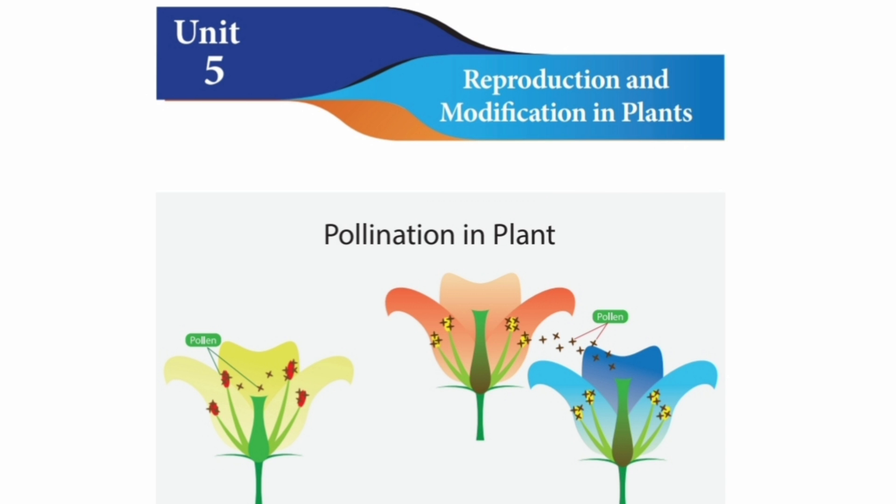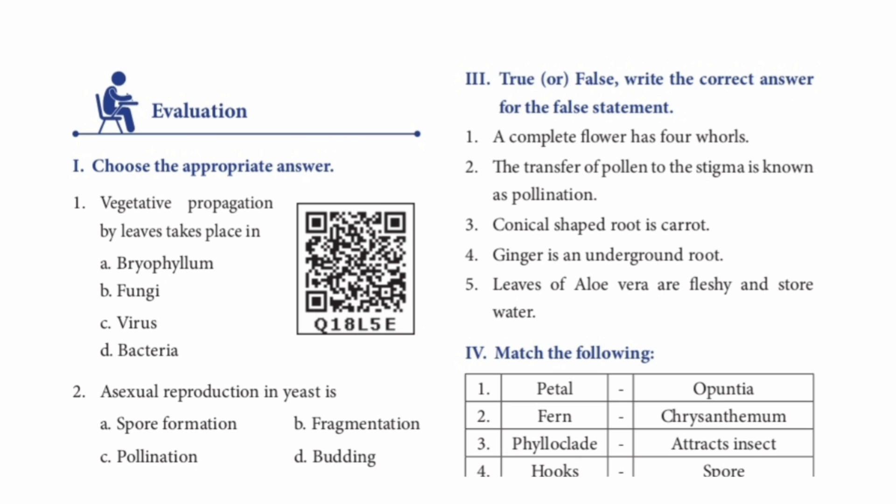7th standard, term 1, unit 5: Reproduction and modification in plants. Book back exercises, Roman numeral I: choose the appropriate answer.